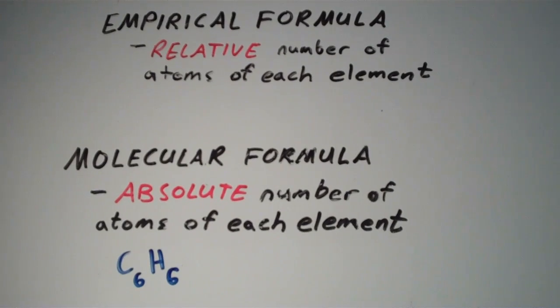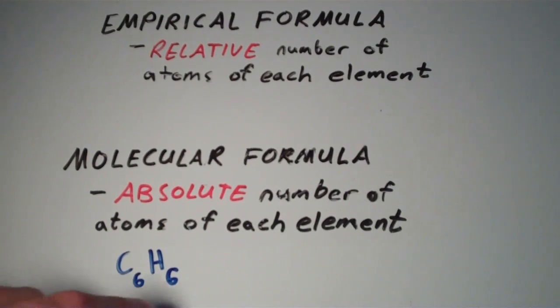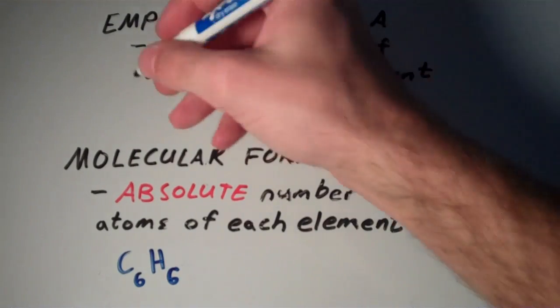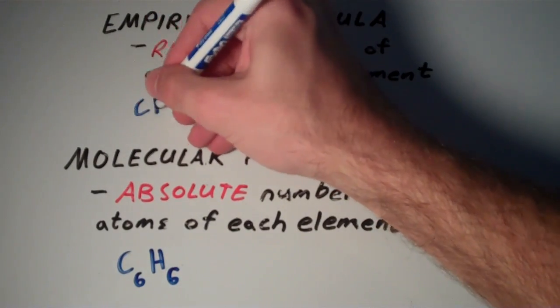The empirical formula shows the relative number of atoms of each element, and since we have a one-to-one ratio of carbon to hydrogen, our empirical formula for C6H6 is just going to be CH.